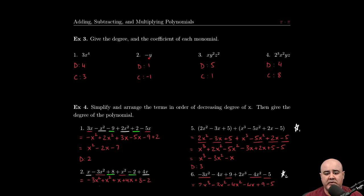For number 2, we have negative y. The degree is 1. That's the highest power of the variable we see. The coefficient, the number being multiplied by the variable, is negative 1.